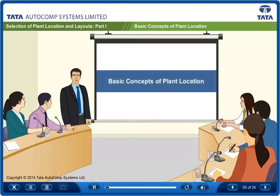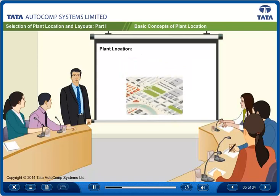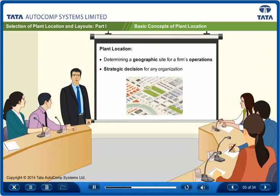We will go through each of these points in detail. Let's first understand the intricacies involved in plant location. We will try to understand what factors are to be considered while selecting the plant location. Selecting a plant location is the process of determining a geographic site for a firm's operations, which is an important strategic decision for any organization.